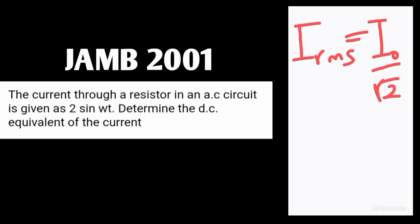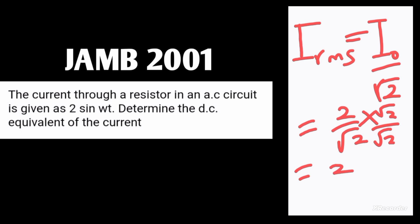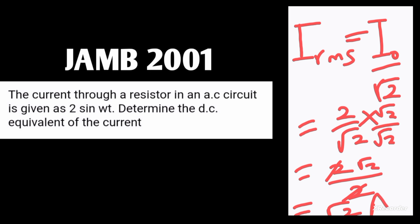From the equation, i-naught the peak current is given as 2, so we are going to have i_rms = 2 over root 2. Rationalizing by multiplying by root 2 over root 2, we get 2 root 2 over 2, and the 2's cancel. Our final answer is root 2 amperes.